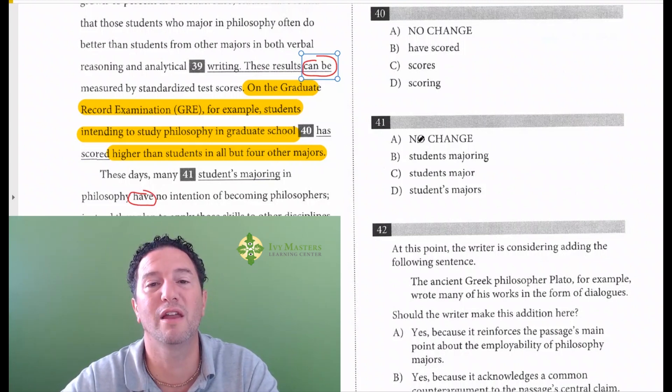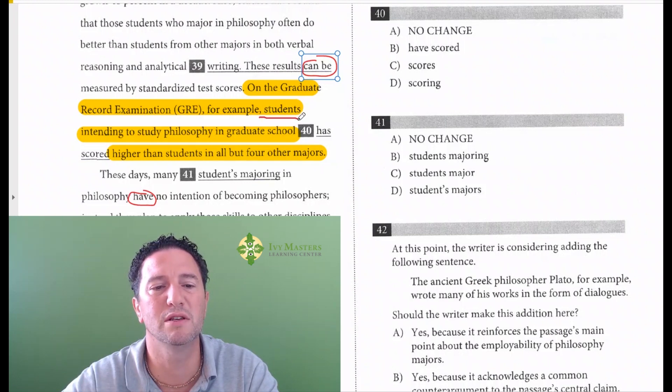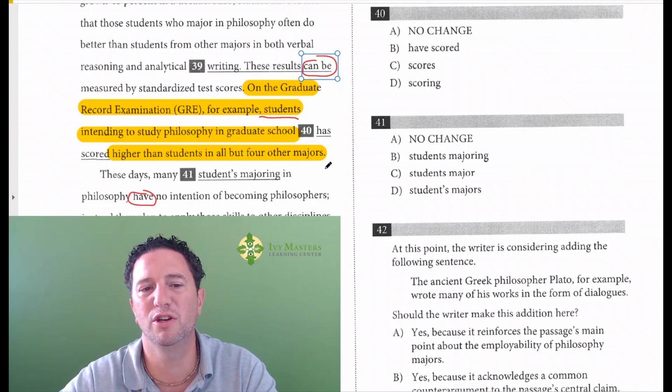The other thing you've got to check for is subject-verb agreement. So we've got to identify the subject here. Who or what has scored higher? It would be students. And if it's unclear whether students would go with has or have or scores or scoring, then replace plurals with they, replace singulars with he, she, or it.